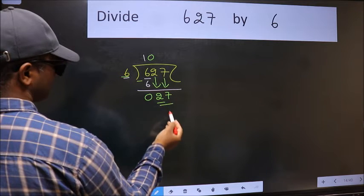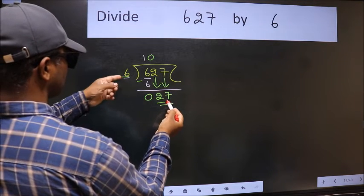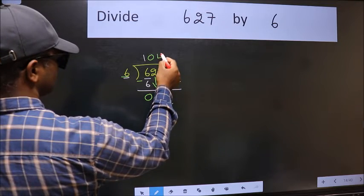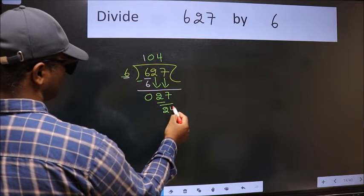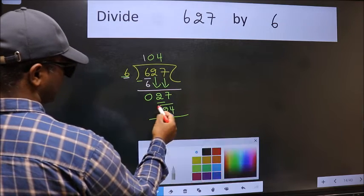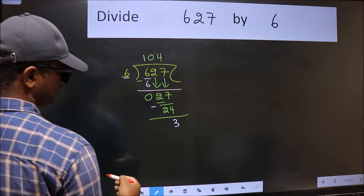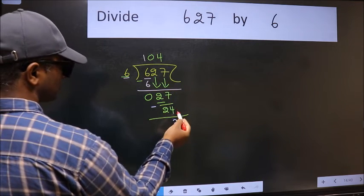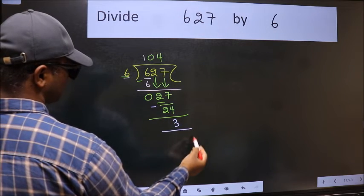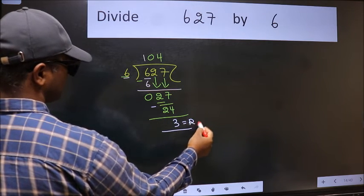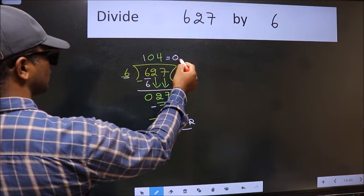Now 27. A number close to 27 in the 6 table is 6 fours 24. Now we should subtract. We get 3. No more numbers to bring it down. So we stop here. This is our remainder and this is our quotient.